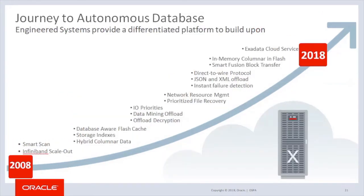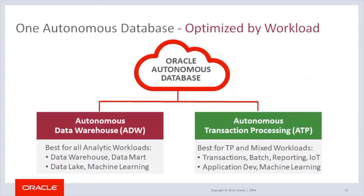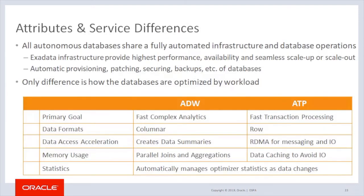It's not just database management that Oracle has been automating — we have also spent the last decade working on the database infrastructure with our engineered systems, which provide the best platform for the Oracle database as they are pre-configured, pre-tested, and optimized platforms for the database. Oracle Autonomous Database is actually a family of cloud services, with each member optimized by workload. The first member is the Autonomous Data Warehouse, optimized for analytic workloads such as data warehouse, data marts, or as part of a data lake. The second member is the Autonomous Transaction Processing, which is optimized for transaction processing or mixed workload environments and makes an excellent platform for new application development. All members share the same fully automated, high-performance Exadata infrastructure providing world-class availability and scalability, and complete automation of all database administration tasks.